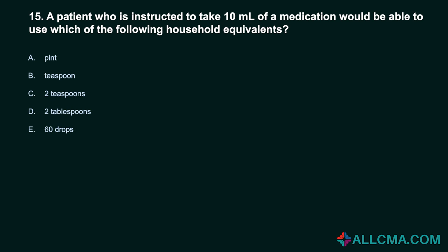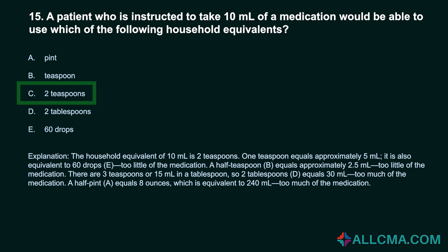Question 15: A patient who is instructed to take 10 ml of a medication would be able to use which of the following household equivalents? A. Pint. B. Teaspoon. C. 2 teaspoons. D. 2 tablespoons. E. 60 drops. Correct answer: C. 2 teaspoons. The household equivalent of 10 ml is 2 teaspoons. One teaspoon equals approximately 5 ml; it is also equivalent to 60 drops — too little of the medication. A half teaspoon equals approximately 2.5 ml, also too little. There are 3 teaspoons or 15 ml in a tablespoon, so 2 tablespoons equals 30 ml — too much. A half pint equals 8 ounces, equivalent to 240 ml — too much.